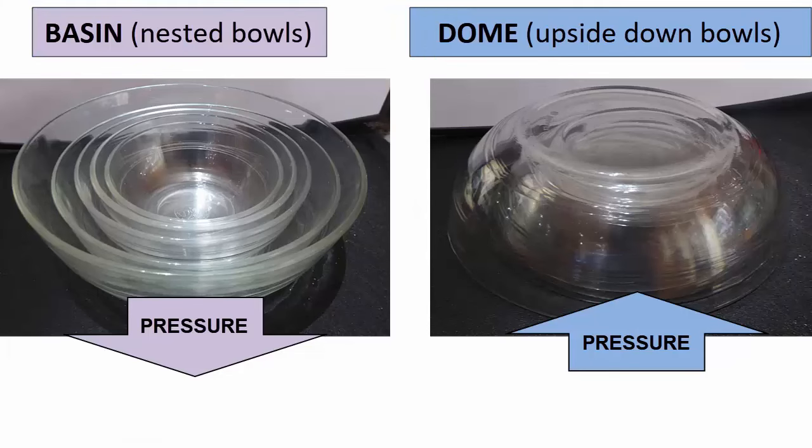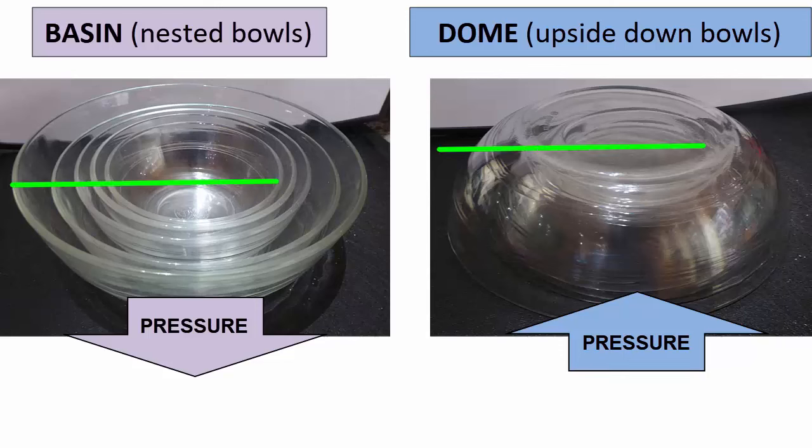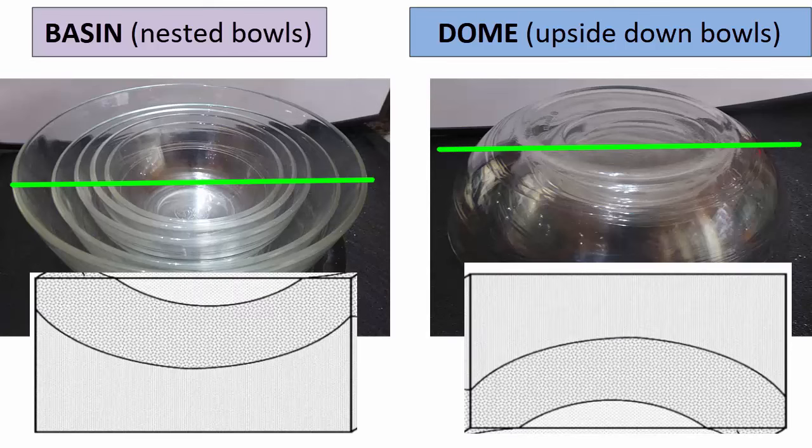Domes and basins are folds caused by pressure underground pushing up, a dome, or above ground pushing down, a basin, in a single spot like a point. These folds have no hinge axes. Take a cross-section anywhere through the center and a basin will look like a syncline and a dome like an anticline, no matter where you cut it.